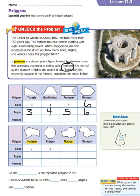Now for vertices: if we have three sides and three angles, we're also going to have three vertices. Our quadrilateral has four vertices, our pentagon has five vertices, and our hexagon has six sides, six angles, and six vertices.